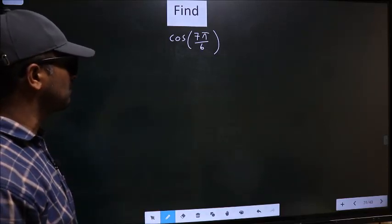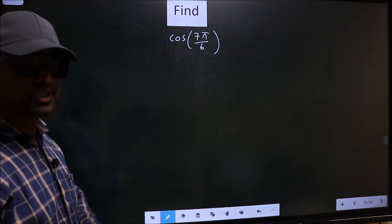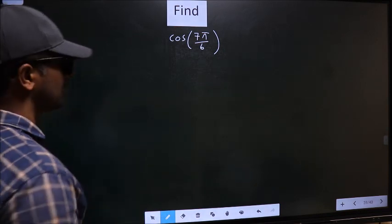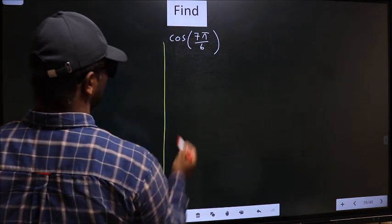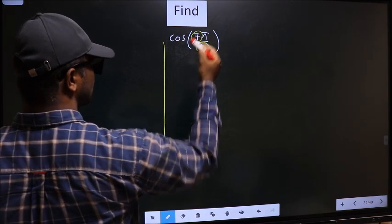Find cos(7π/6). To find this, we should follow this method. In the denominator, we have 6. In the numerator, we have 7.